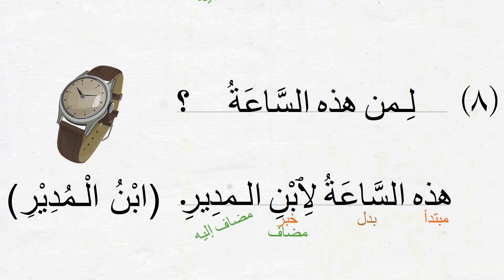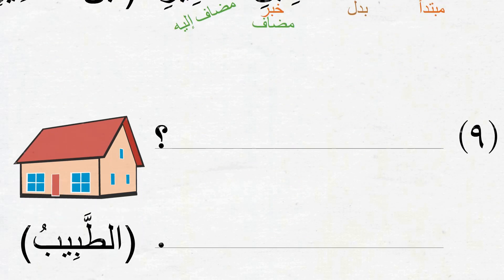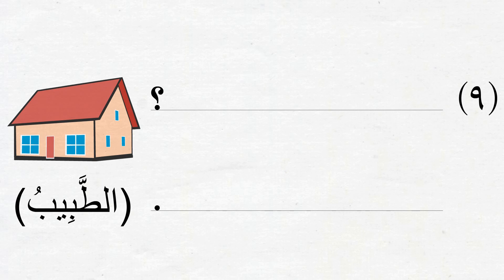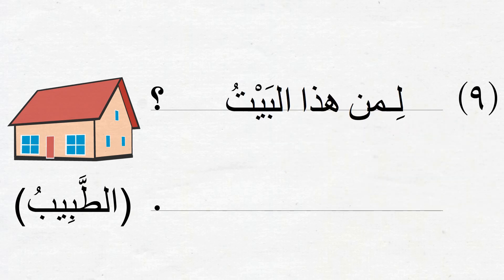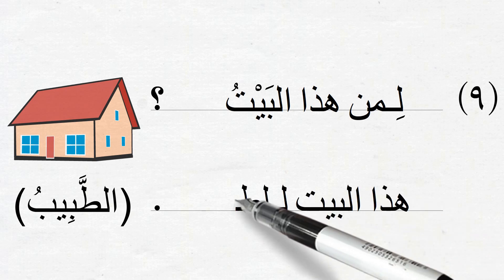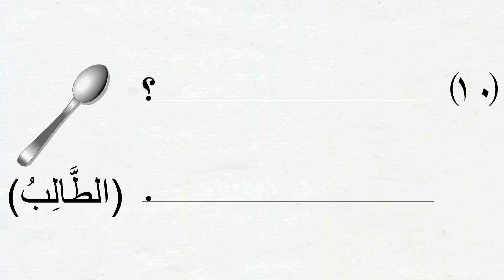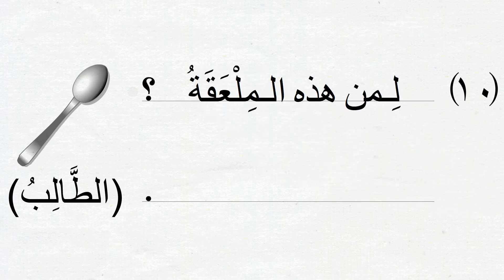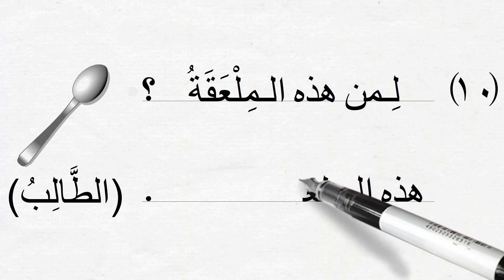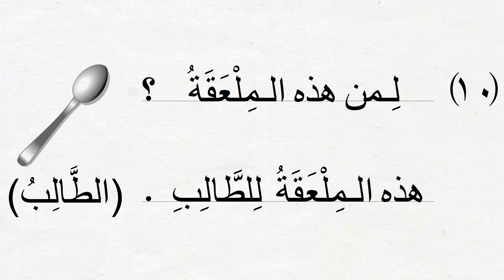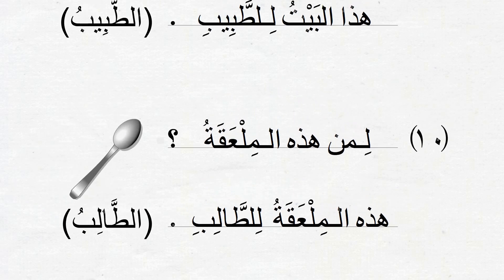Part 9 is about البيت. The question is: لمن هذا البيت — whose is this house, and the answer is: هذا البيت للطبيب — this house belongs to the doctor. The final part is about الملعقة. We ask: لمن هذه الملعقة — whose is this spoon, using هذه because الملعقة is مؤنث. The answer is: هذه الملعقة للطالب — this spoon belongs to the student.